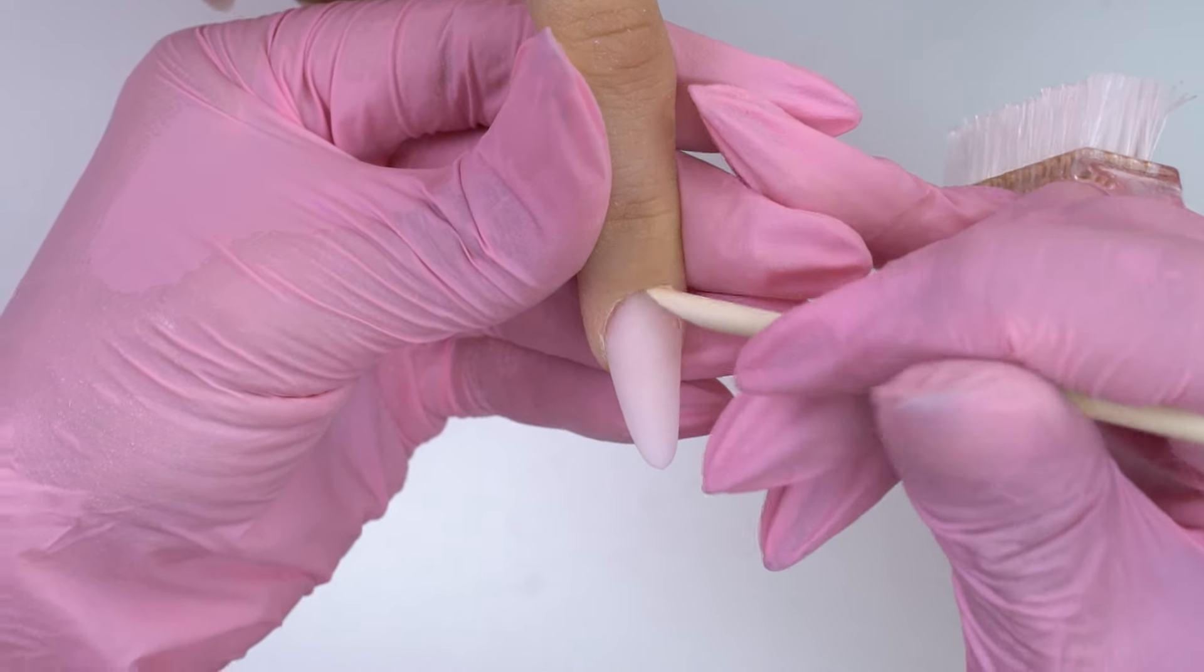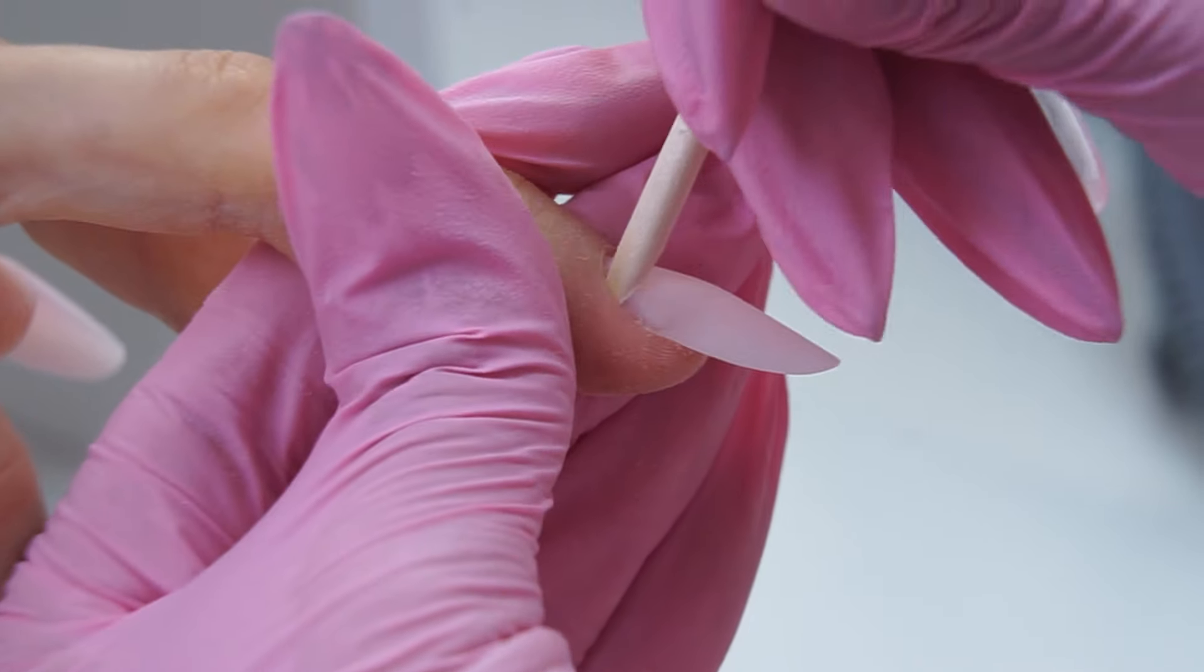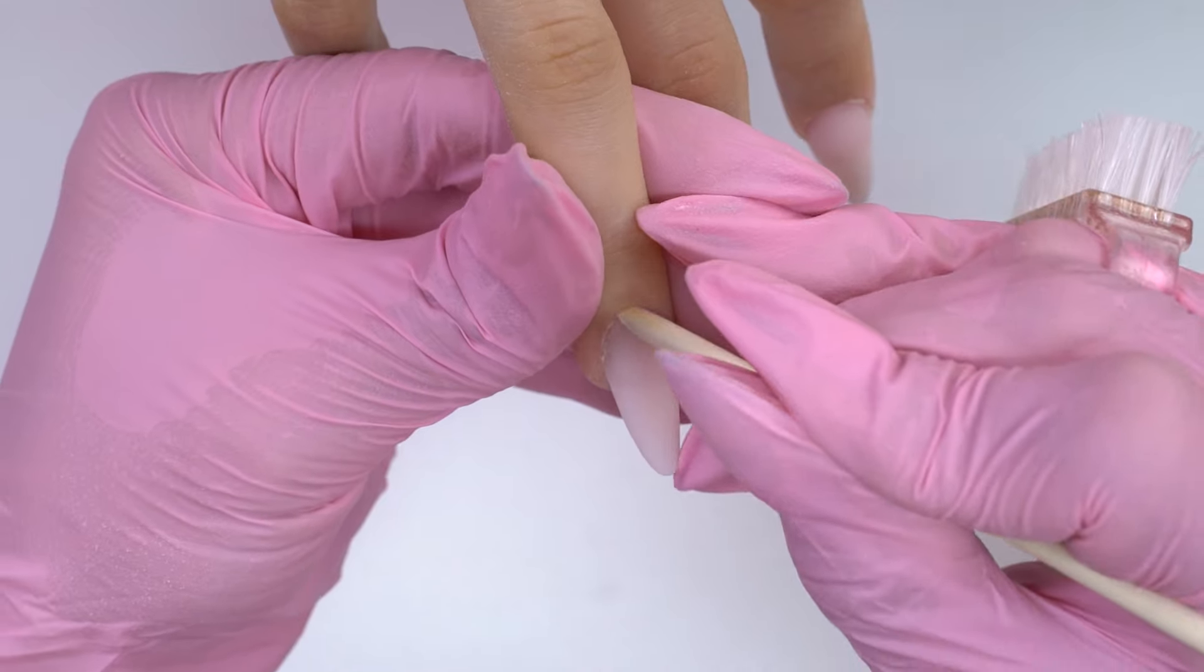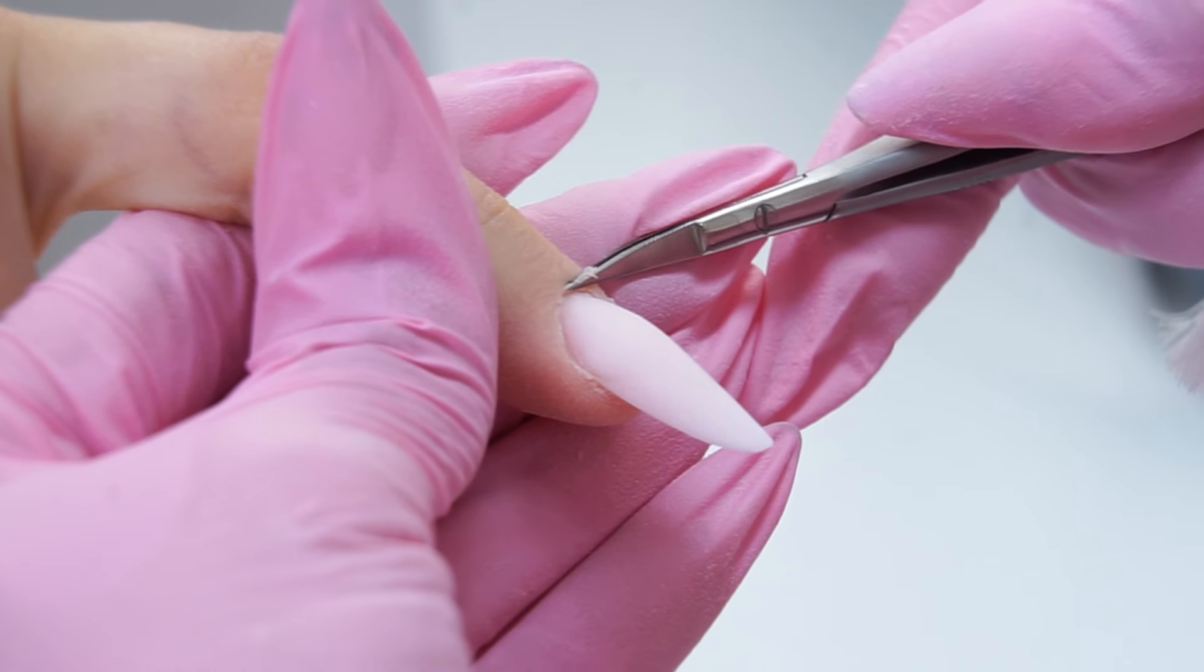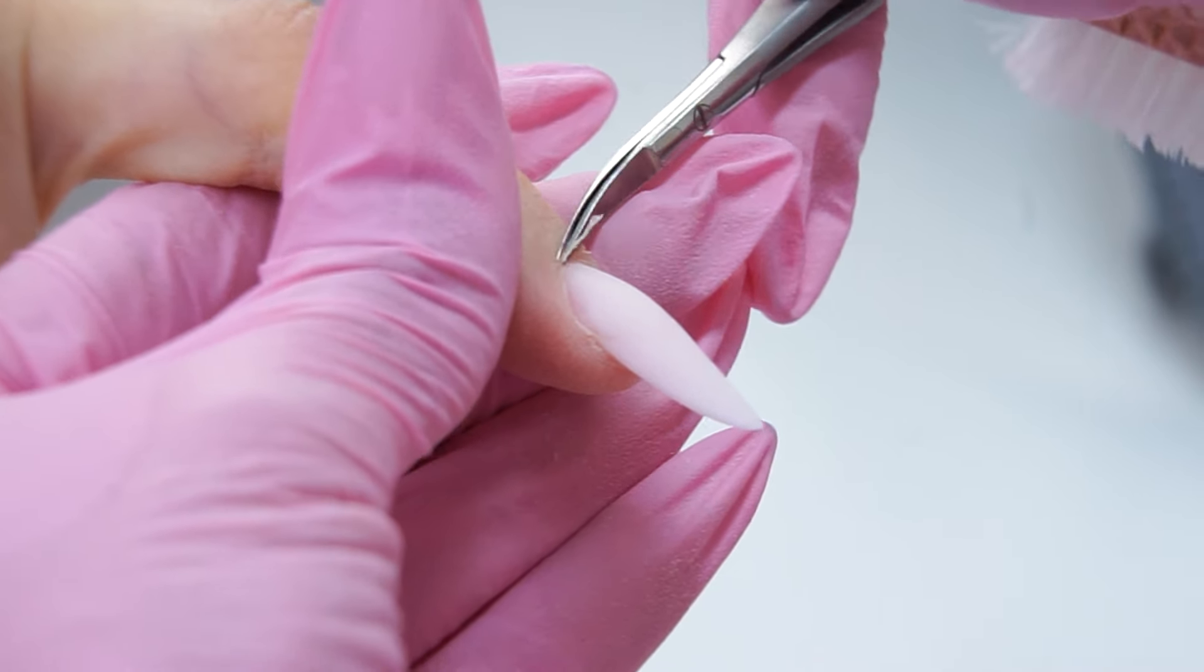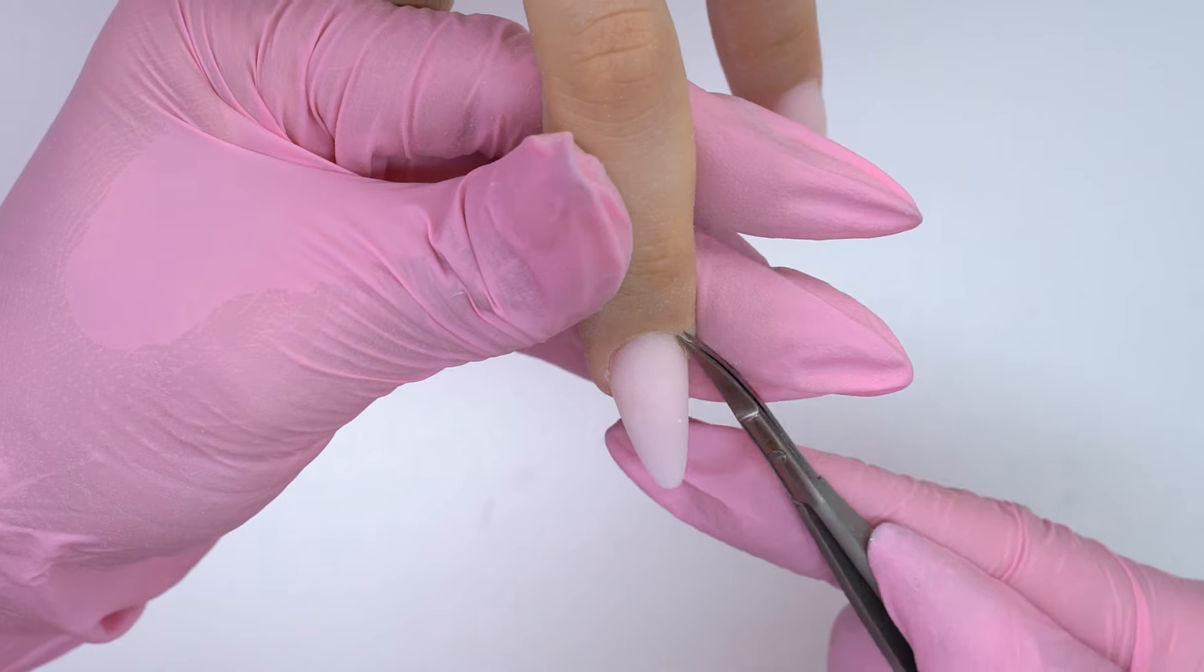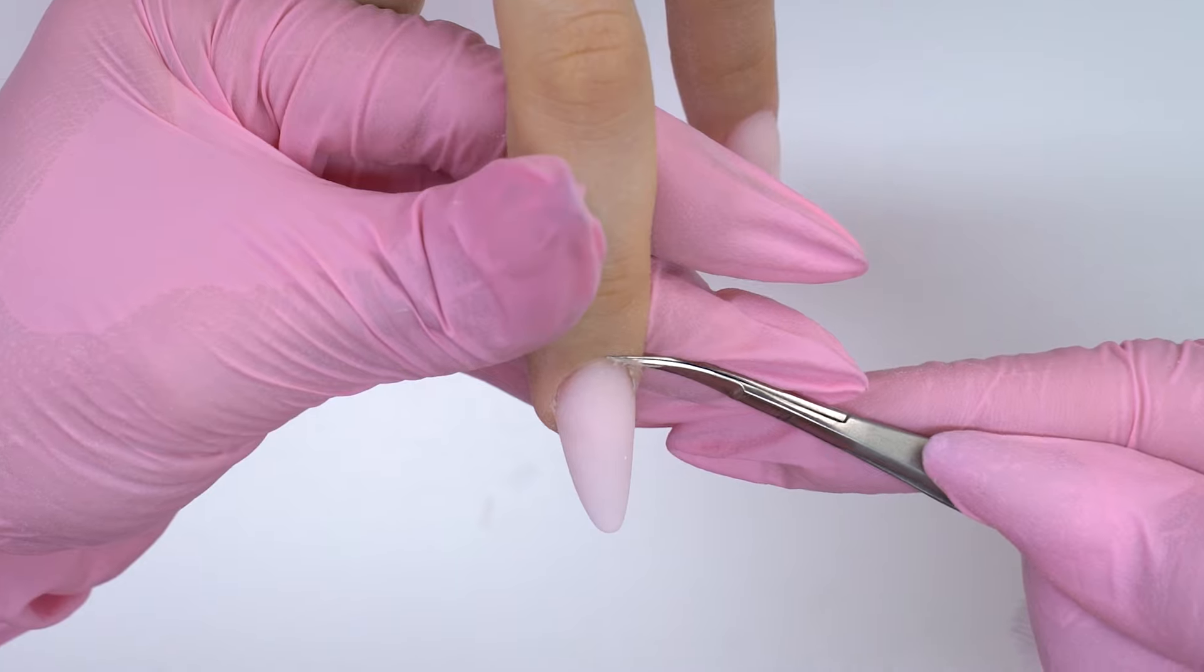Now it's time to cut the cuticle. Since it has fallen after filing, I lift it up with an orange stick. Opening its pocket. And quickly cut it off with tweezers scissors. They work like tweezers. Which is great for beginners as well. For example, our students work with such tweezers, and they love them.